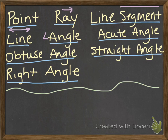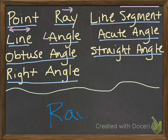Let's try another one: a part of a line that has one endpoint and continues without end in one direction. If you said ray, you are correct — part of a line, has one endpoint, and continues in one direction forever.